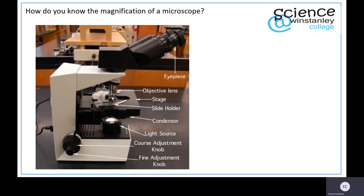So how do you know the magnification of a microscope? If someone has asked you to work out actual size and you need to know the magnification, you take the microscope you've been working with and find the magnification of the eyepiece lens. On this particular microscope it's times 10.